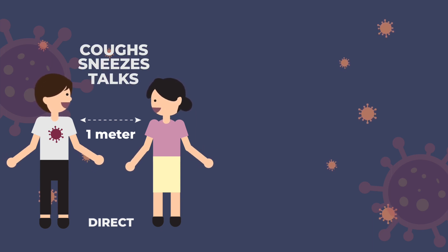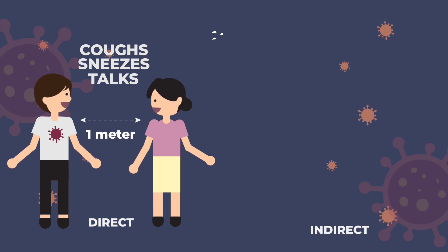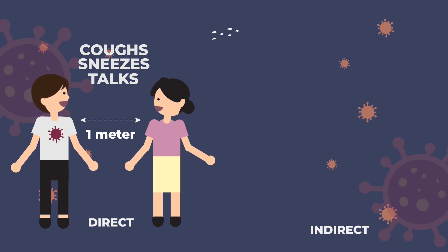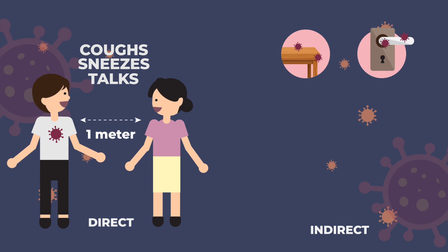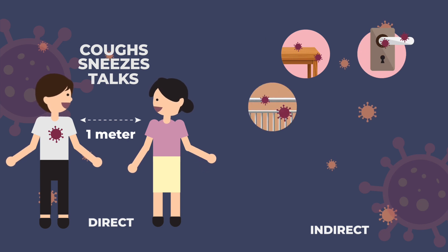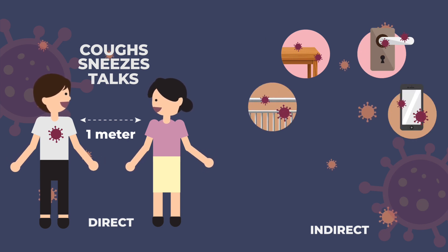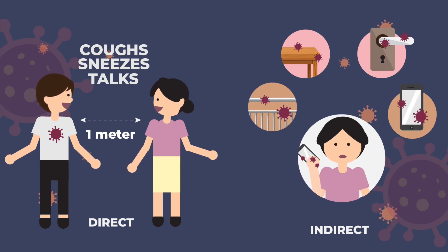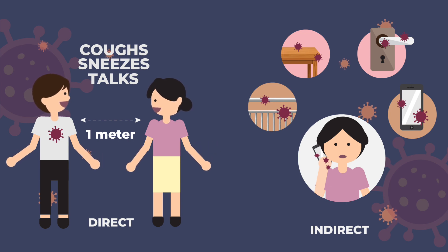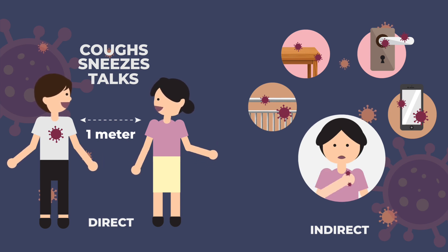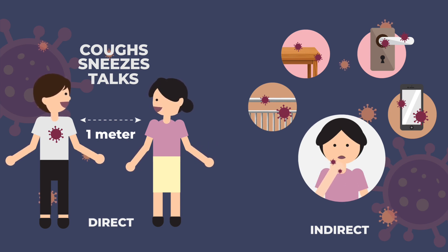These droplets containing the virus can also land on objects and surfaces around the person, such as tables, doorknobs, handrails, and cell phones. People can become infected by touching these objects or surfaces, then touching their eyes, nose, or mouth.